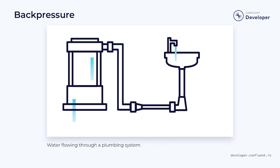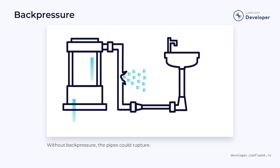One of the key similarities between our plumbing analogy and data streams is the role of back pressure. In our plumbing analogy, when we turn off the faucet, that causes back pressure in the pipes. This pressure goes all the way back to the water source and prevents any more water from flowing. If we didn't have this back pressure, the source would keep pushing water and it would have nowhere to go — the result could be a catastrophic failure somewhere in the pipes.